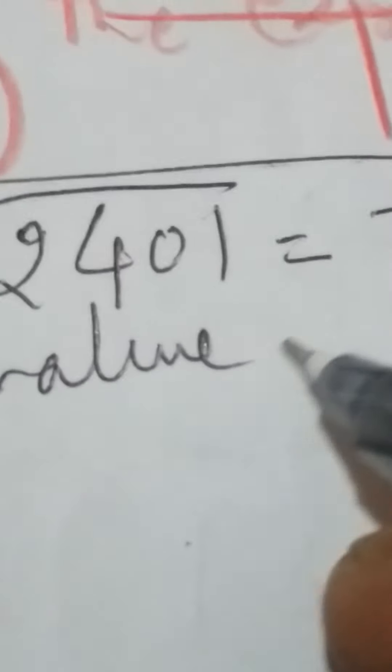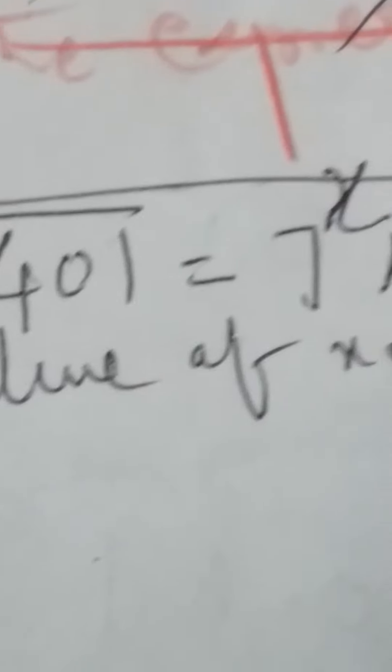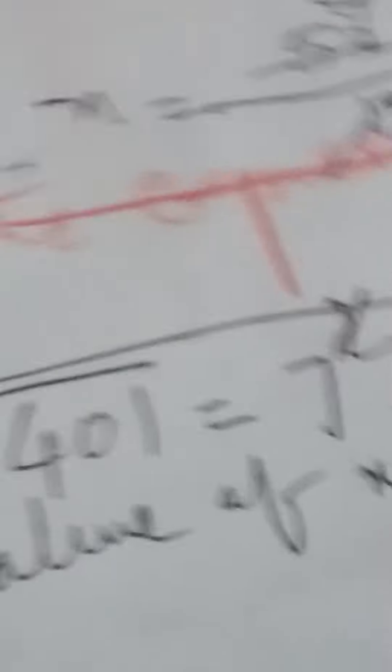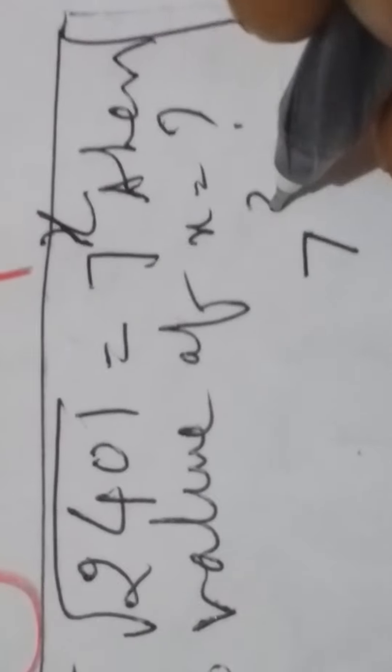Then the value of x is easy if you know very well cubes of 7. What is the 7 cube? 7 cube is 343.